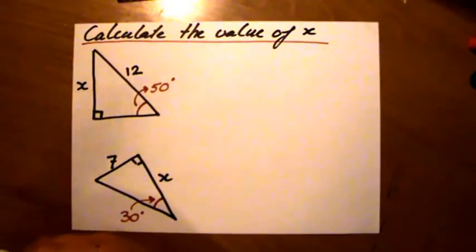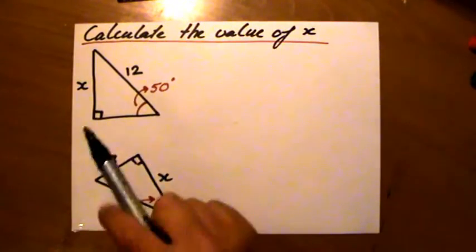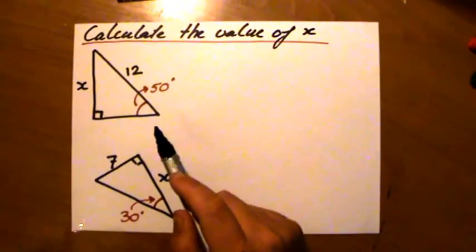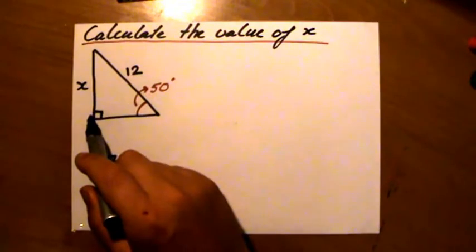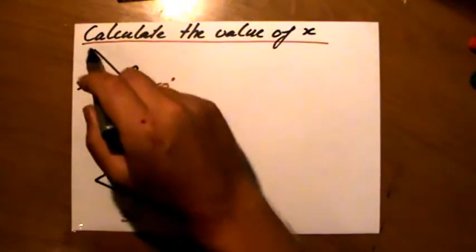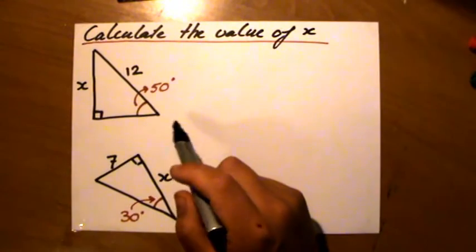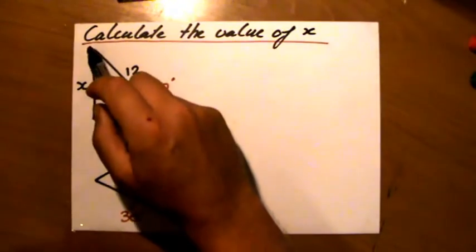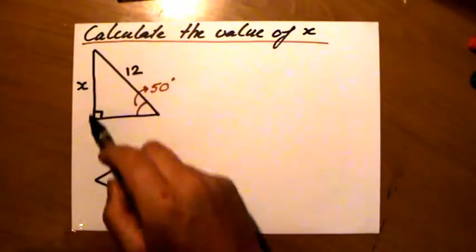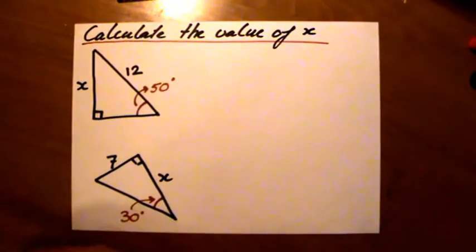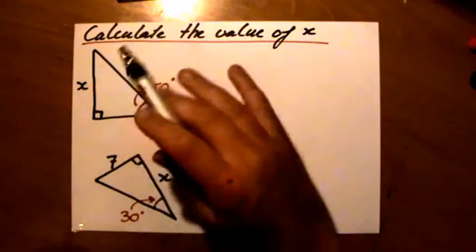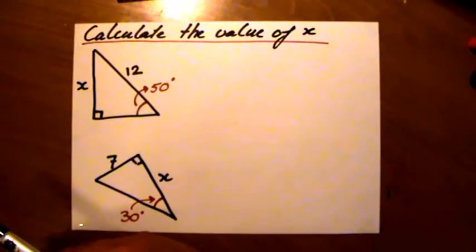Pythagoras said a squared plus b squared equals the hypotenuse squared. One length squared plus the other length squared equals hypotenuse squared. However, in this particular situation, I know the hypotenuse but both of the other sides are unknown, so I can't use Pythagoras' theorem. I'm getting a little bit nervous now because it's not going to work.